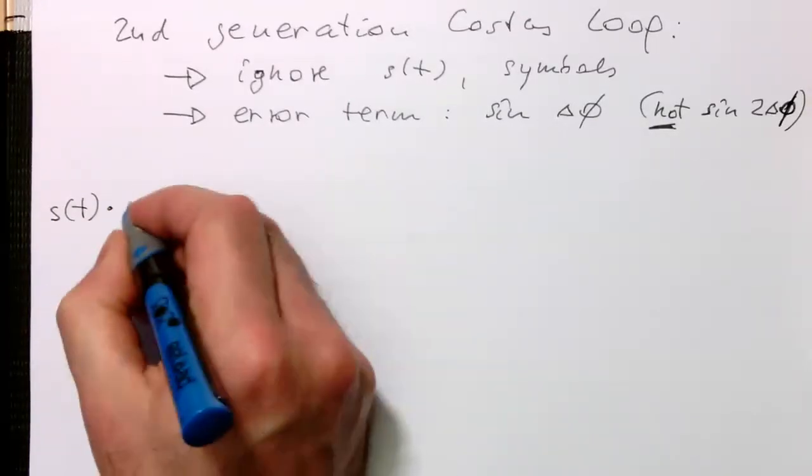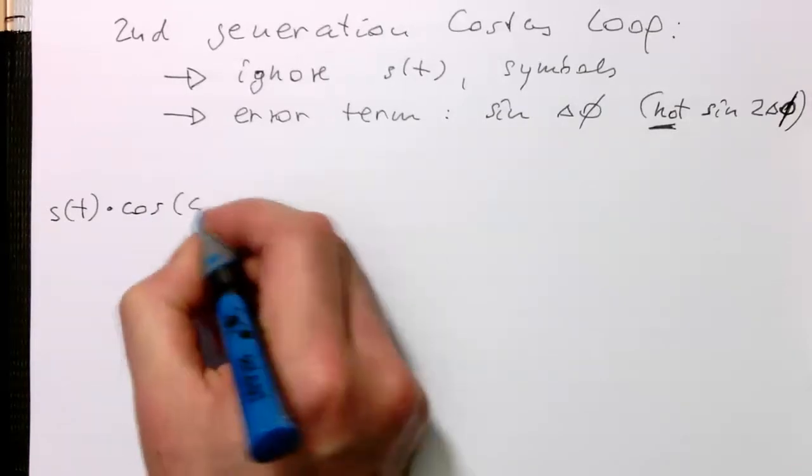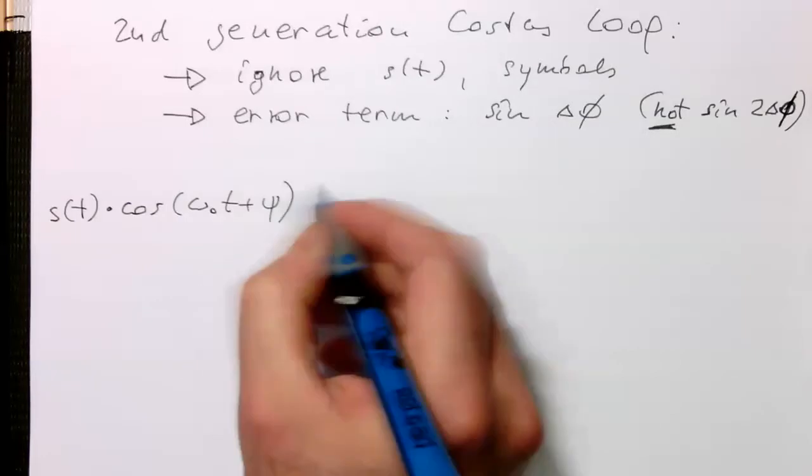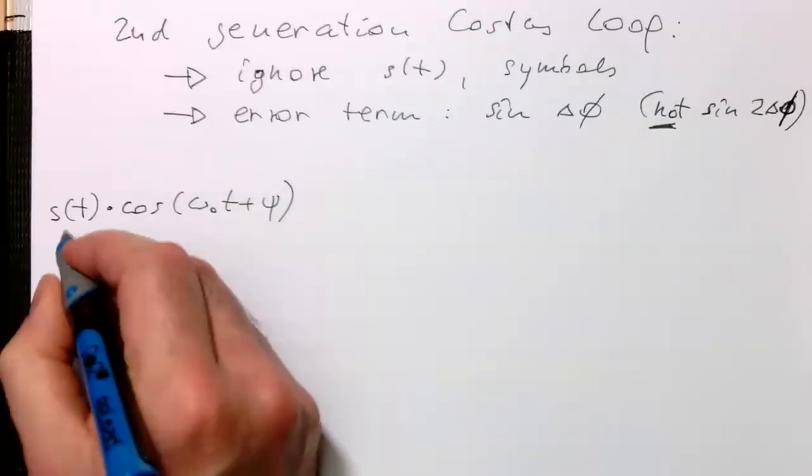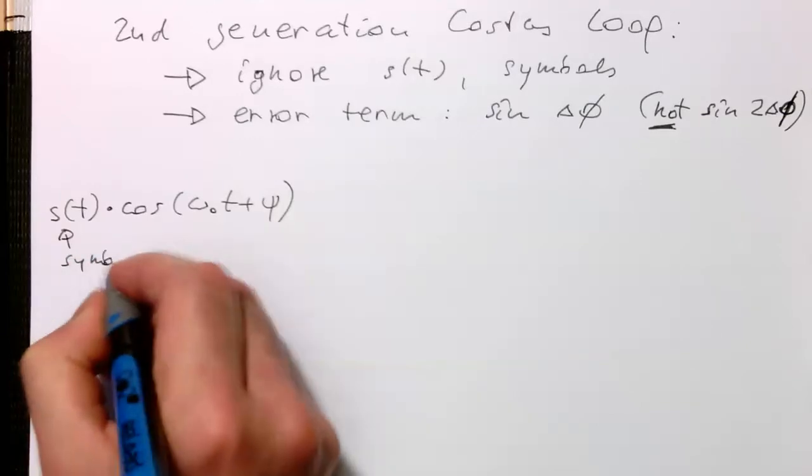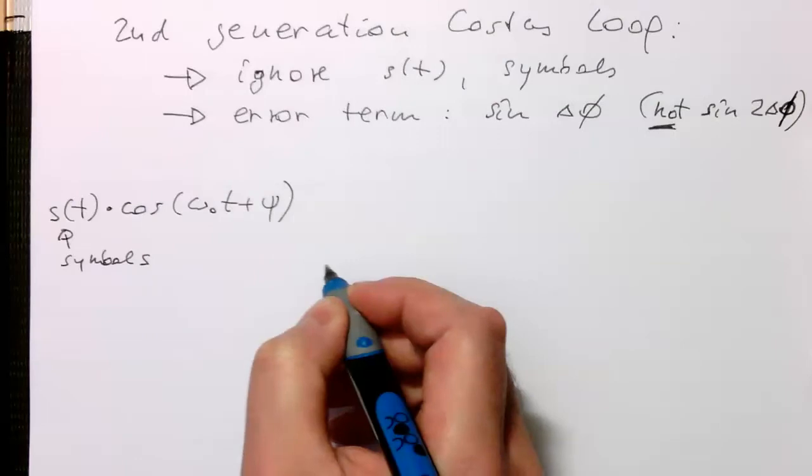So let's draw quickly our data flow diagram again. Let's first draw this in the way that we have our classical PLL. So these are our symbols again coming in, which are creating our phase shifts.